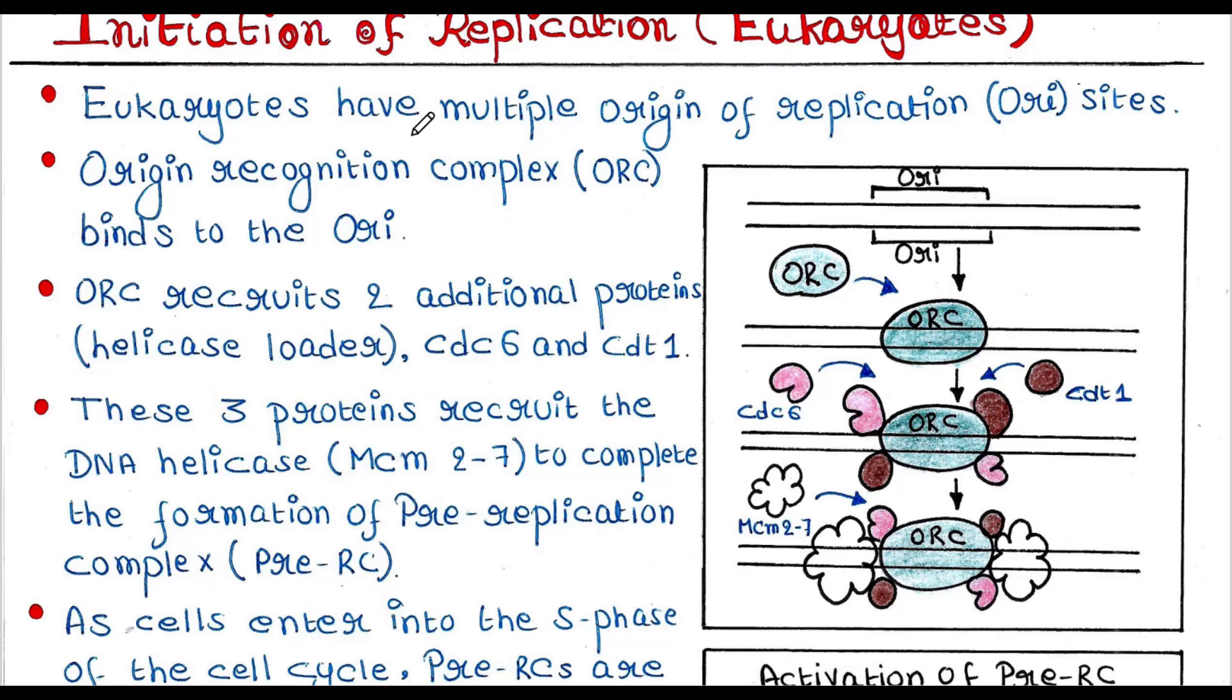Eukaryotes have multiple origin of replication sites, or ori sites. Unlike prokaryotes, eukaryotes have multiple origin of replication, whereas prokaryotes have only one. So this is the ori site in our image.